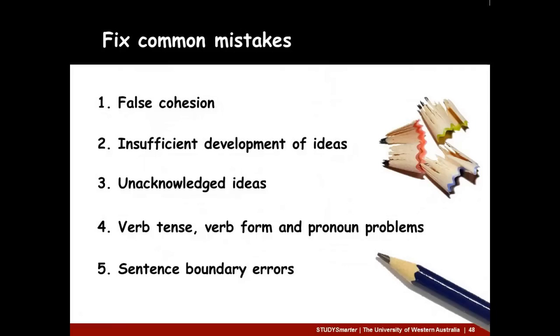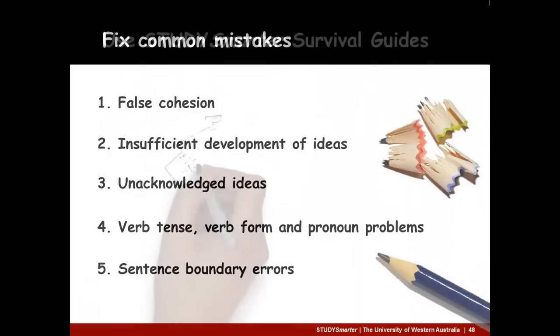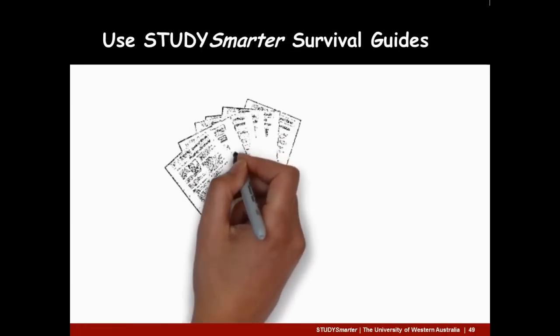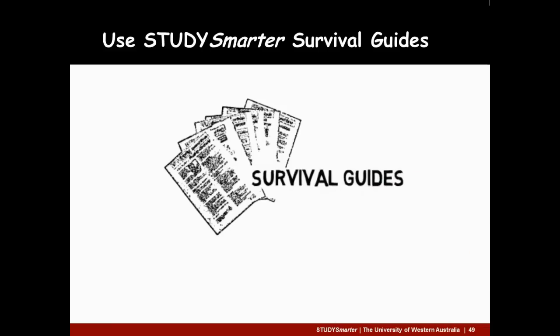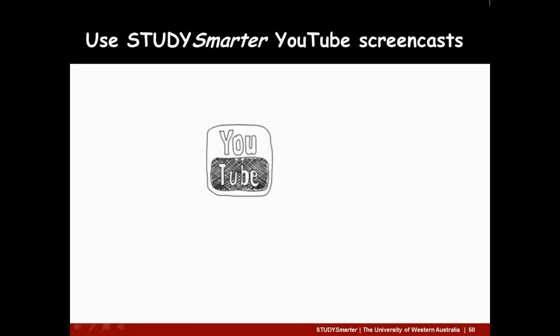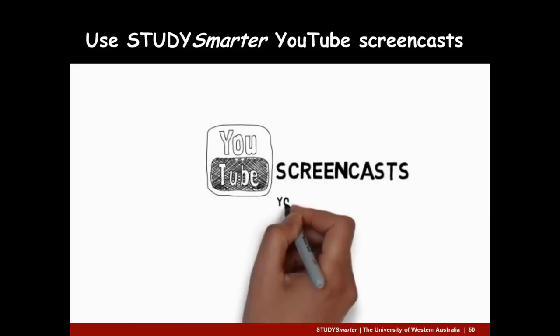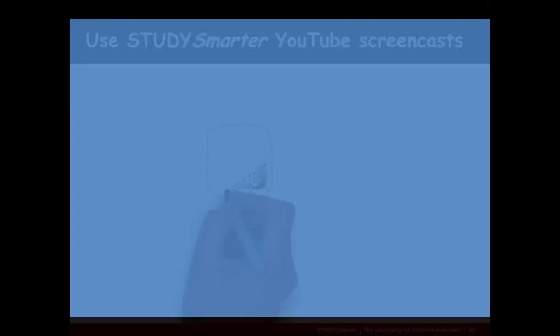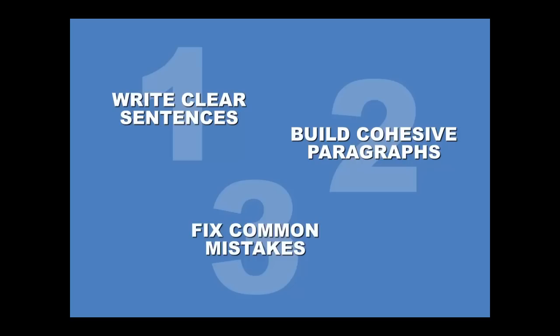Remember, you can fix common mistakes if you look out for these five things. If you'd like more resources to improve grammar and writing skills, check out the survival guides on the Study Smarter website. Also check Study Smarter's YouTube resources — there are plenty of screencasts with useful information about improving skills for your study, including academic writing skills and grammar. Use these tips to help you write clear sentences, build cohesive paragraphs, and fix common writing mistakes, so that your psychology assignments are clearer, easier to read, and have greater impact.